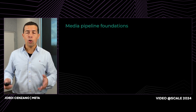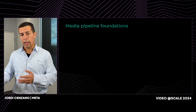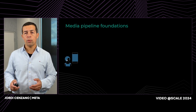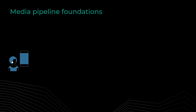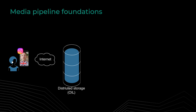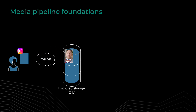But before going into detail on the translation and the lip-syncing, I would like to describe the overall pipeline. This animation describes how this pipeline works. Everything starts with your awesome content. You created a reel, in this case in English, that you want to upload and share with your friends. The first step is to upload this to our distributed storage, what we call OIL, that is specifically designed to handle media.